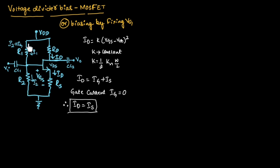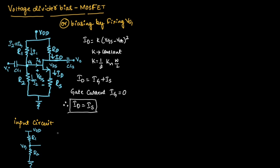Similar to the voltage divider circuit of BJT, first we will simplify the input side of the voltage divider circuit of MOSFET. Let us consider the input circuit and use Thevenin's theorem to find Thevenin's voltage and Thevenin's resistance. Thevenin's voltage between Vg and ground can be written as R2 divided by (R1 plus R2) into Vdd.